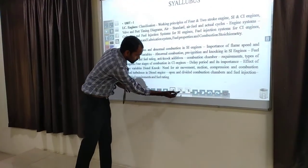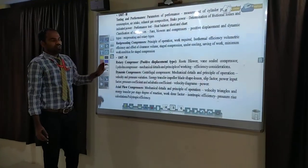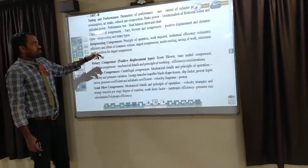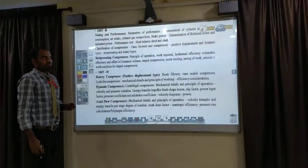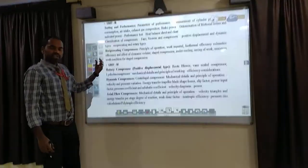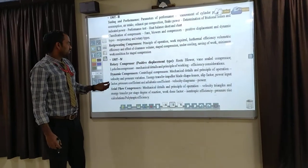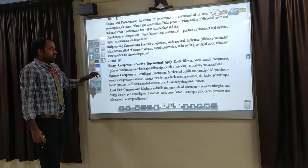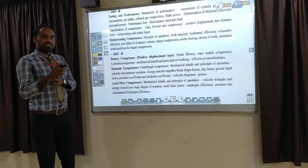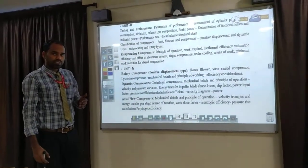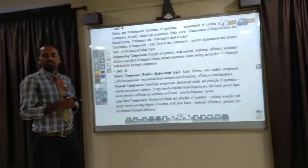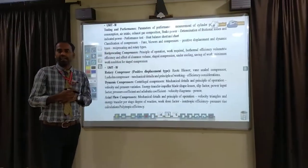In the third unit, testing and performance: principles of operating, indicated power, isothermal efficiency, and volumetric efficiency. In this third unit, we find the heat balance sheet, volumetric efficiency, and isothermal efficiency. The fifth unit is gas turbines, and in this we find the volumetric efficiency and isothermal efficiency, and we find the heat balance sheet.